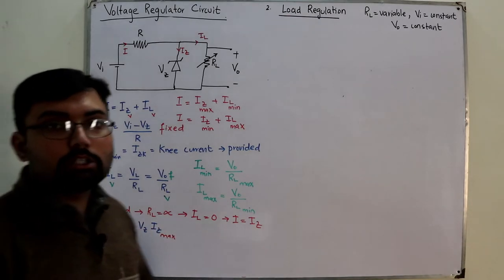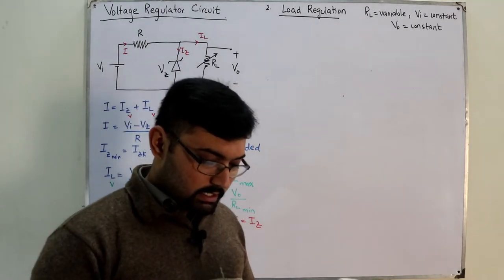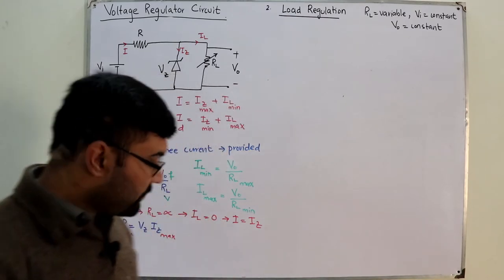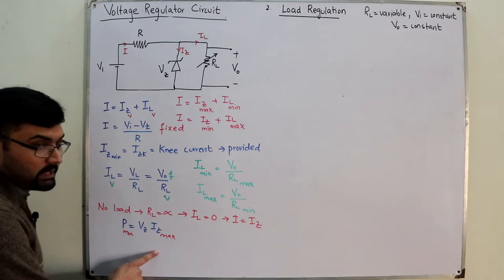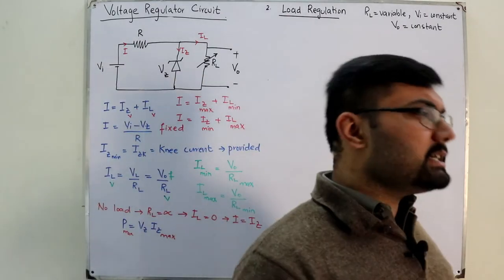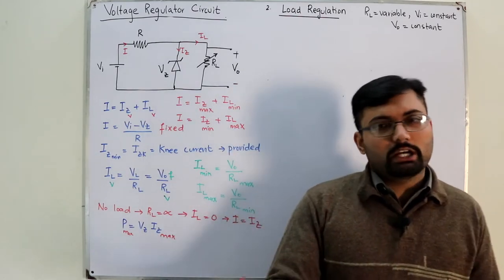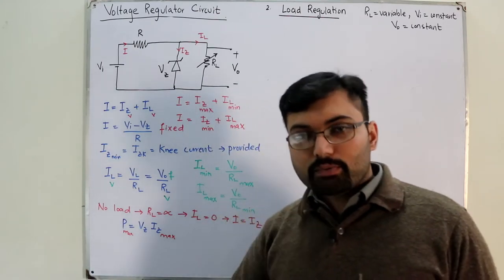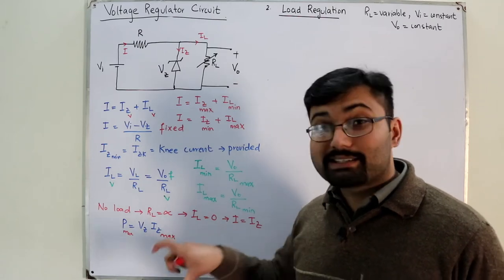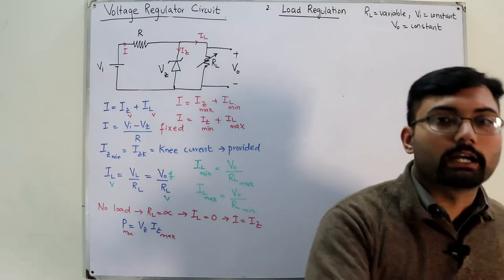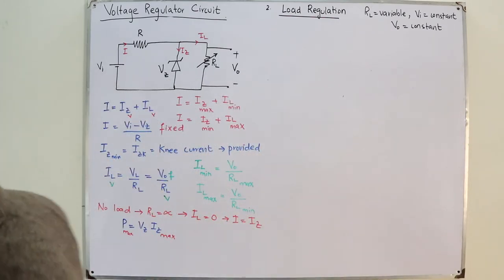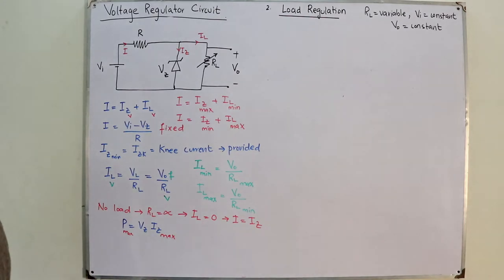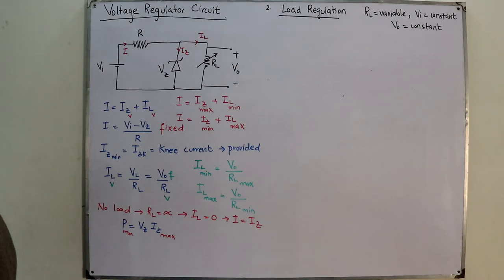The power rating should be greater than the maximum power dissipation. In exam scenarios, if the exact value of VZ × IZmax is not among the options, choose the next higher value. Now let's move to an example — Example 2.27 from the book.